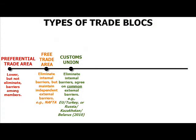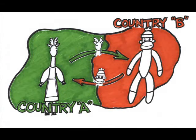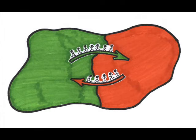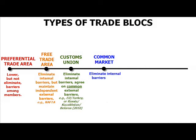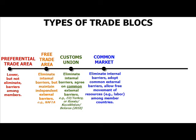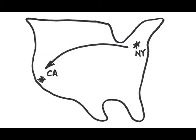After the customs union, trade blocs begin to address the flow not only of goods and services, but also the flow of resources, like labor. In a common market, members eliminate internal trade barriers, adopt common external trade barriers, and allow free movement of resources among the member countries. Think about the U.S. — if you lived in New York and wanted to leave New York for a job in California, there are no barriers to prevent you from making that choice.